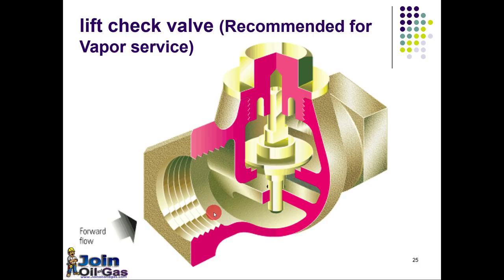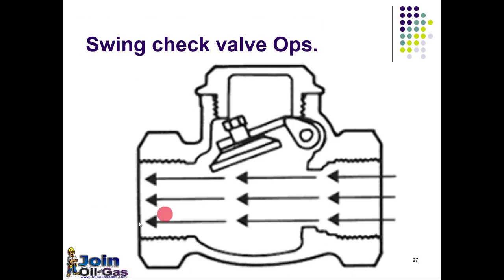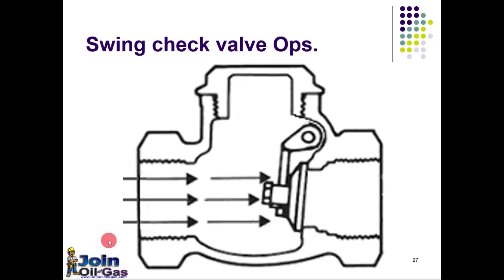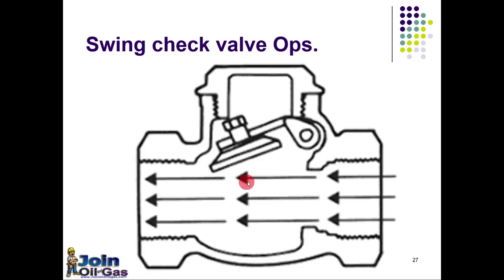Another type is the lift check valve. The flow inlet — when there is enough pressure it will lift the check valve and the flow will go to the outlet section. Whenever the flow tries to come back, this disc will close. There is also the swing check valve, mostly used for liquids. Flow enters from one side, lifts the swing plate, and the flow moves forward. Whenever the flow tries to reverse back, the flapper closes and stops the backflow.